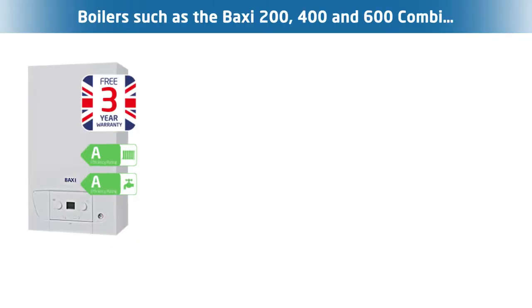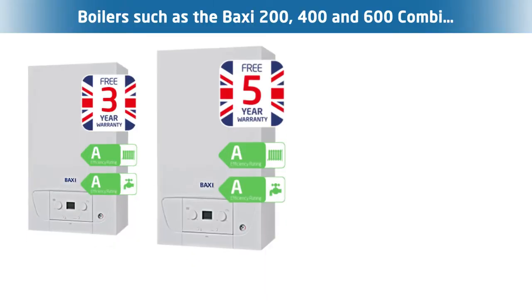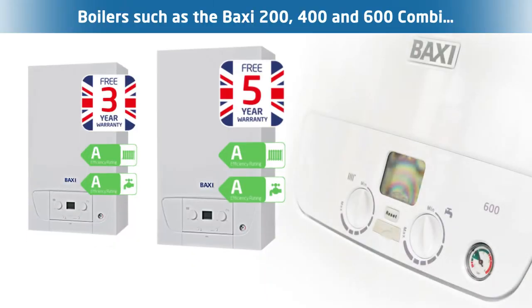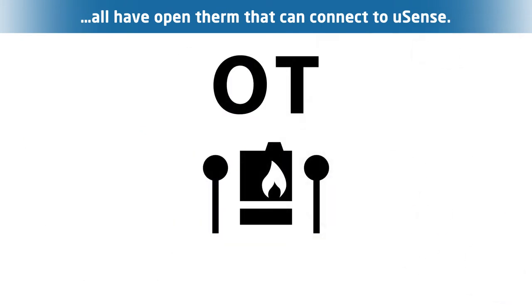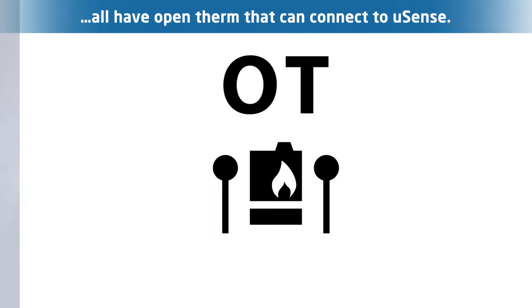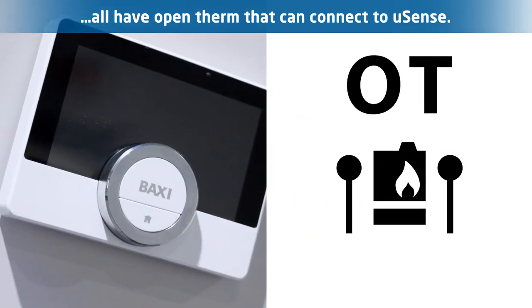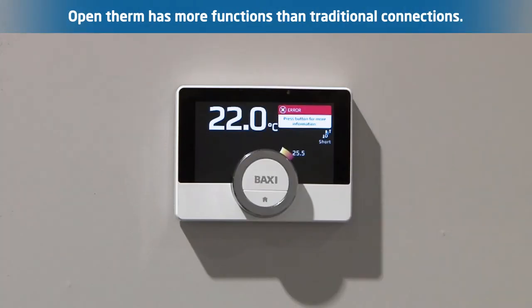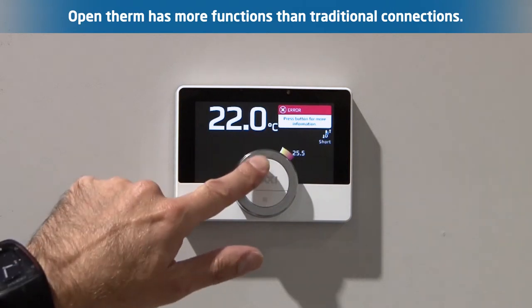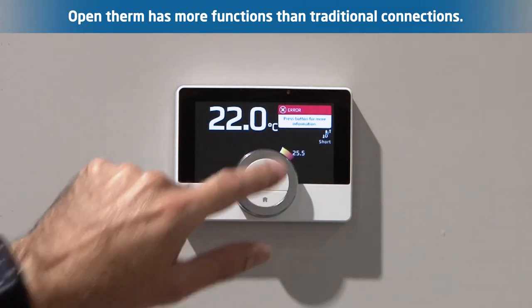Boilers such as the Baxi 200, 400 and 600 combis are all equipped with OpenTherm as a means of connecting to the Usense. OpenTherm has greater functionality than traditional methods of connection.